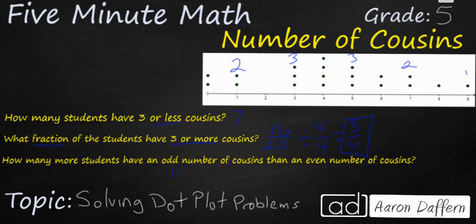And then let's go ahead and total up the number of students that said they had an even number of cousins. So I had two for zero, four for four, two for six, and one for eight. So that is going to give us nine students that have an even number of cousins. How many more means that we are going to find the difference or subtract. And so 11 minus nine is going to make two.